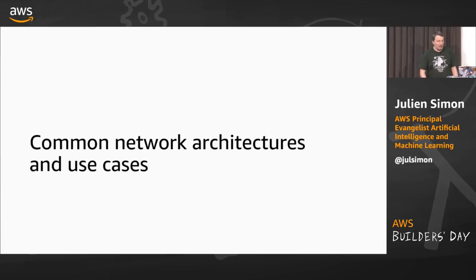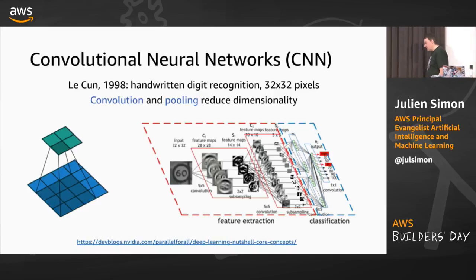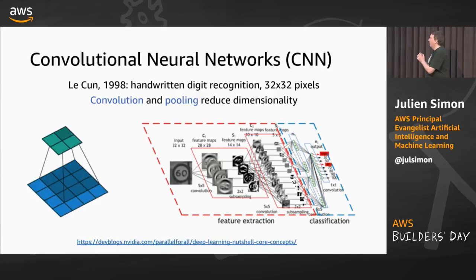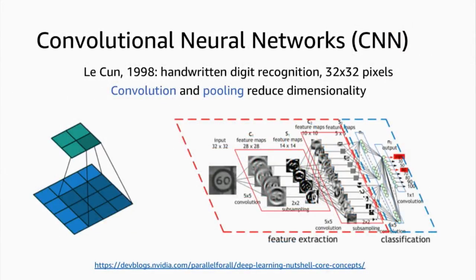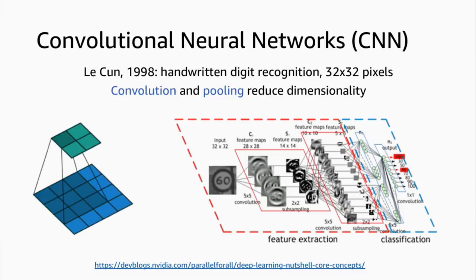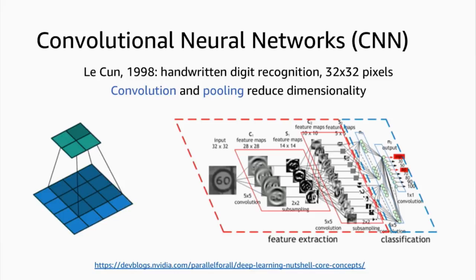Let's move on to networks. We're going to look at some of those networks, what you can do with them, and then run the demos. Let's start with probably the king of neural networks at the moment — it's called the convolutional neural network, or CNN. These go back quite a while. They were invented by a researcher called Yann LeCun, a French guy, who is now heading the Facebook AI lab in Paris and is one of the world's top deep learning and AI experts.